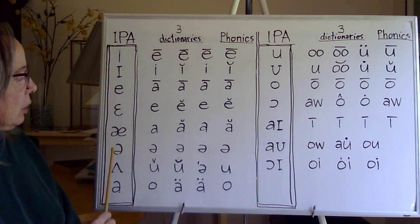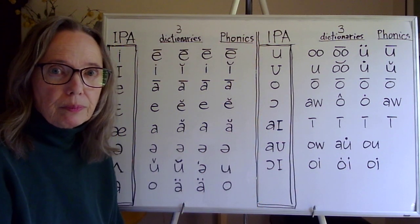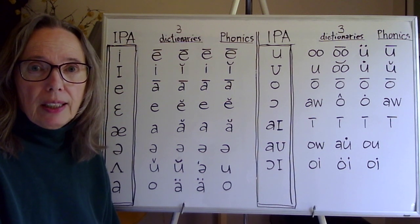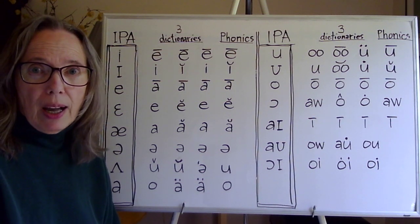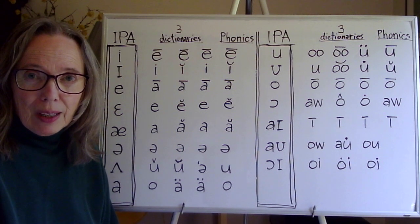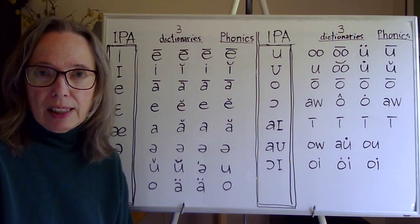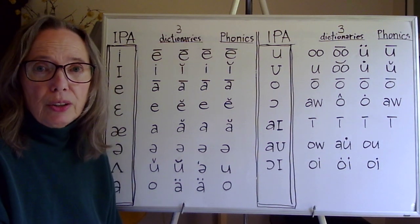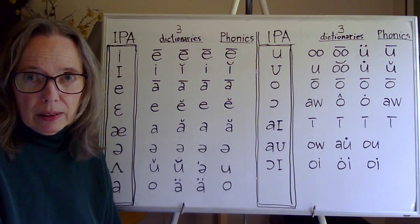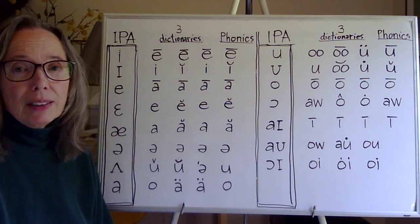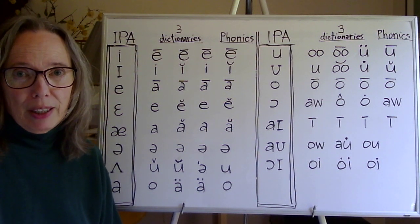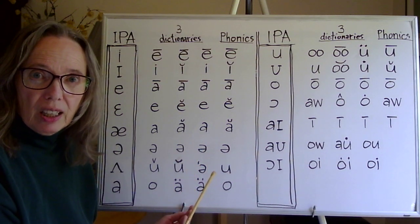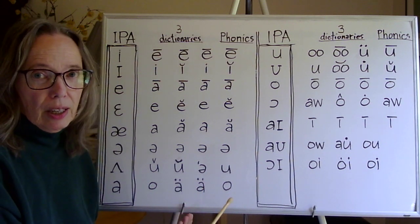I have put the list of the IPA vowels, and across from each one I have put different symbols that you could find in an American dictionary or maybe used by an instructor. Why did they decide to use these symbols? I think they wanted to use letters of the alphabet, but there are 12 vowels in English and there are only five letters in the alphabet, so they had to modify these letters to represent the additional vowel sounds we have in English.